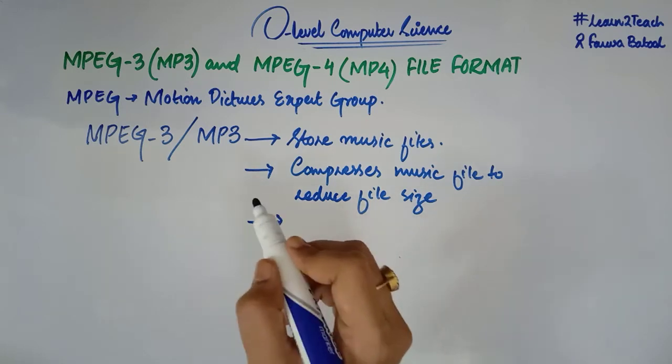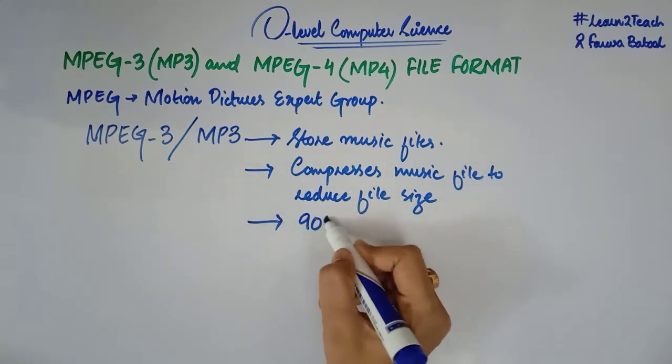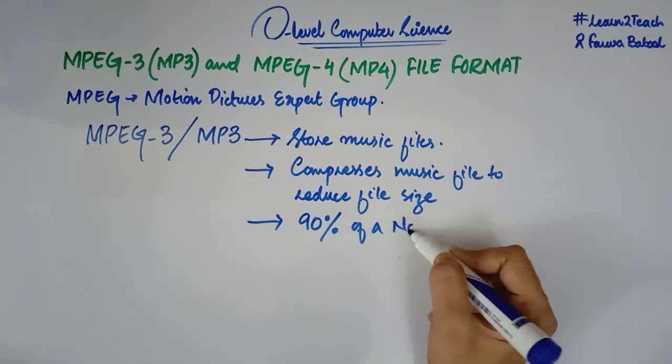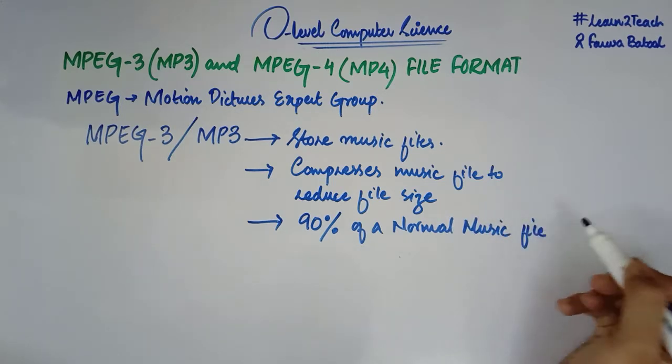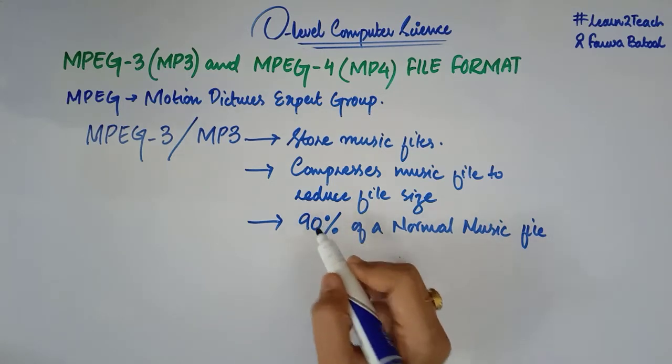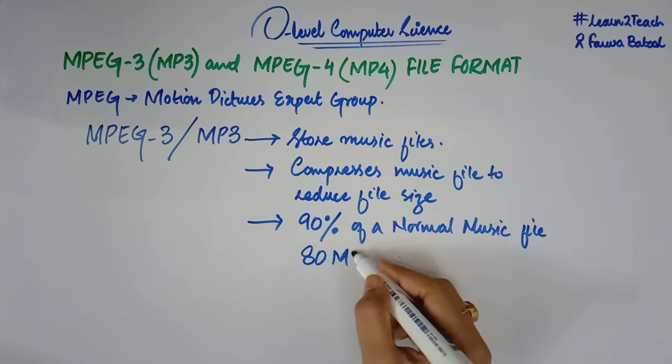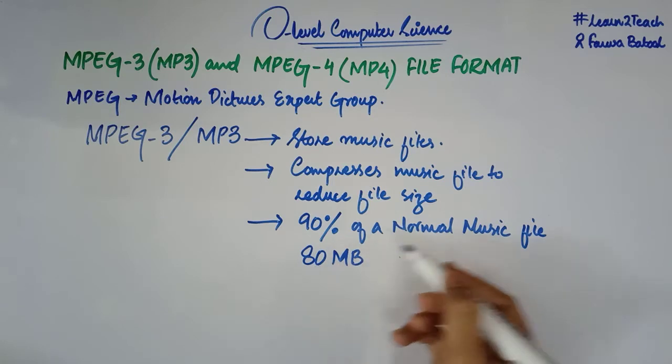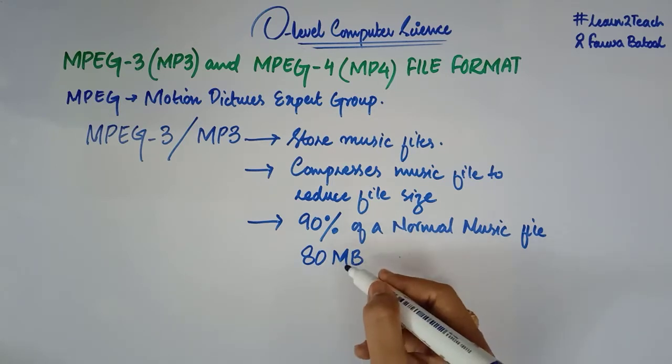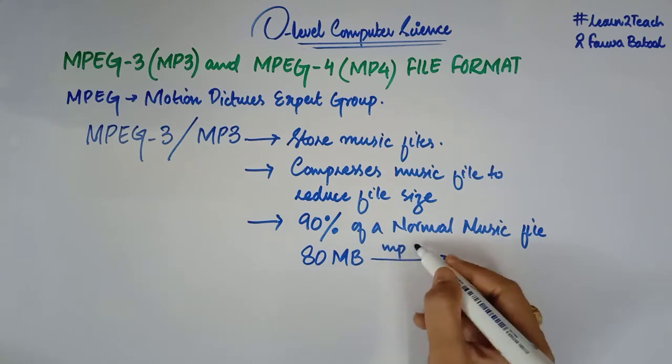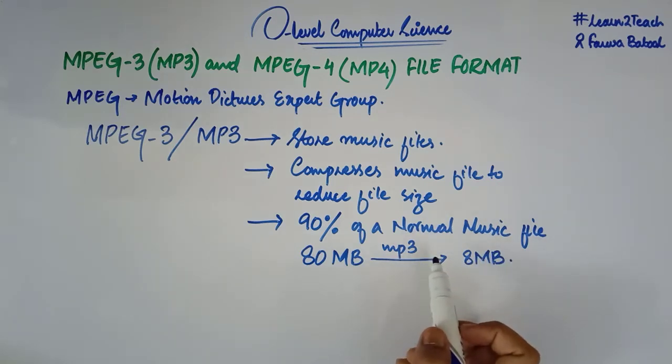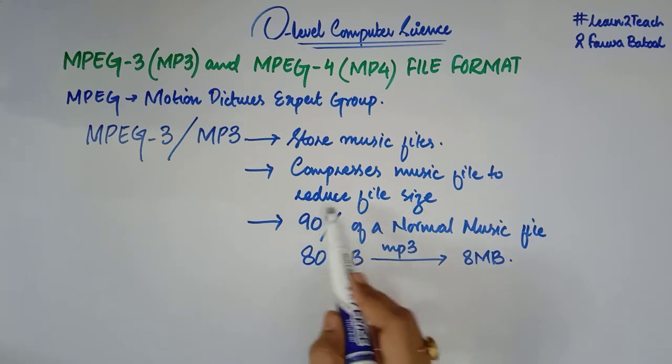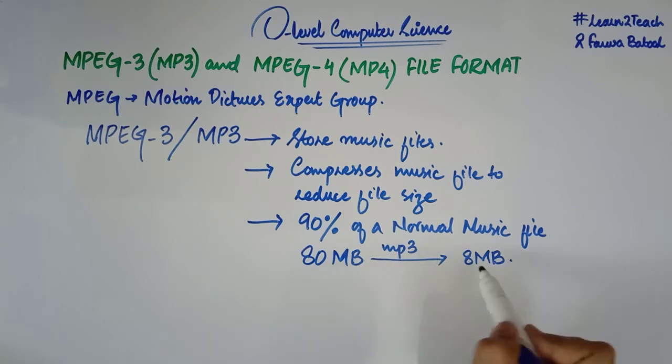The next important thing is that an MP3 file reduces about 90% of a normal music file. It reduces 90% of the size. For example, I have an 80MB song, a music file that is 80MB in terms of its size. And if I convert it into MP3, then it is going to have 8MB of size. This is why we say it reduces the file size by 90%.